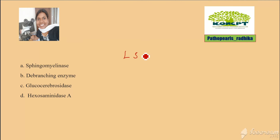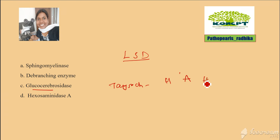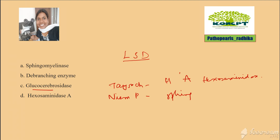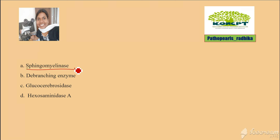For lysosomal storage disorders: Gaucher's is due to glucocerebrosidase deficiency. Next, Tay-Sachs disease is due to Hexosaminidase A deficiency. Niemann-Pick is due to sphingomyelinase deficiency. So remember: Tay-Sachs is Hexosaminidase A, and Niemann-Pick is sphingomyelinase deficiency. Now, option A — sphingomyelinase deficiency leads to Niemann-Pick's disease.